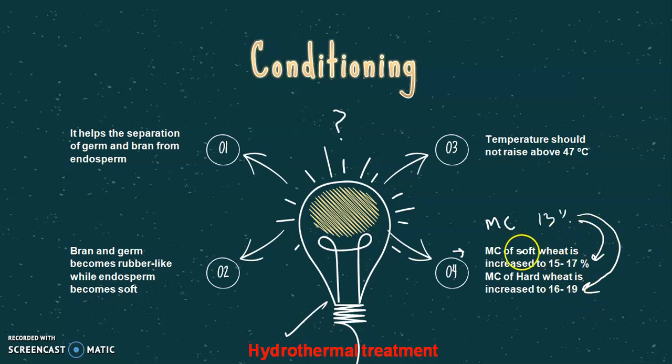One thing is very important: we should not increase the temperature above 47 degrees Celsius. Why? Because the wheat grain contains a very important protein, that is gluten, and this gluten is responsible for bread making. It has functional properties which we will study in the coming lectures. If heat above 47 degrees Celsius is used, the functionality of this gluten may be lost.